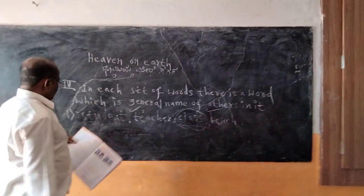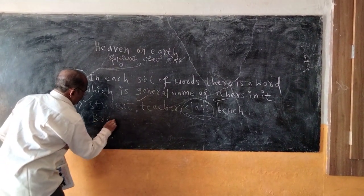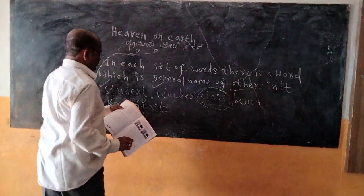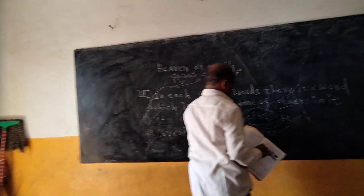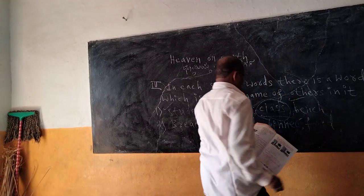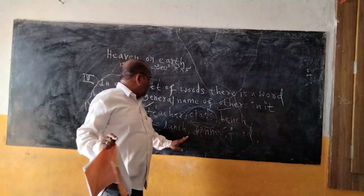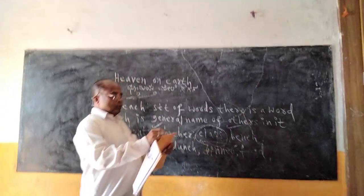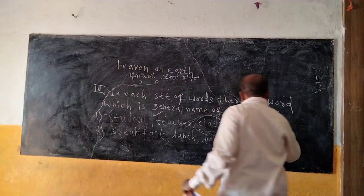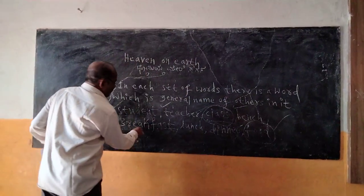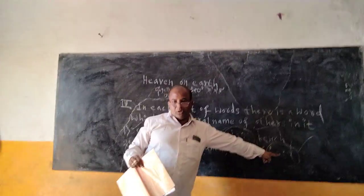Likewise, we have to choose that general word in a set of words. For example: breakfast, lunch, dinner — here you have to choose the common word 'food.' Breakfast, lunch, dinner all come under food. Food is the common word you have to identify.